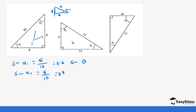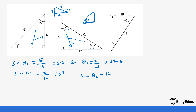So sine alpha 2 is opposite, which is 8, over 10, which gives us 0.8. For triangle 2, if you want to look for the sine of this angle, it's opposite which is 5 over hypotenuse which is 13, so 5 divided by 13 gives 0.3846. We can also get this other angle — if you bring the angle down, the opposite is going to be 12, so sine of this angle equals 12 over hypotenuse 13, which gives 0.9230.